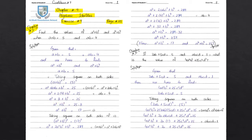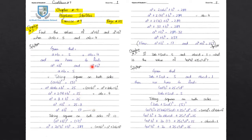We have a square plus 2ab plus b square equal to 25. Now substituting ab equals 4, so 2ab equals 8. Therefore a square plus b square is equal to 25 minus 8, which is equal to 17.